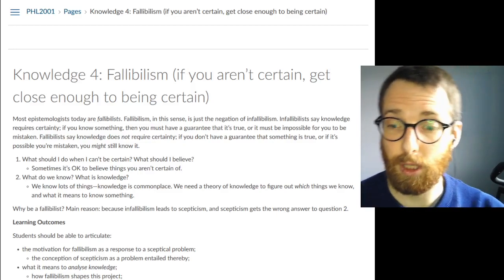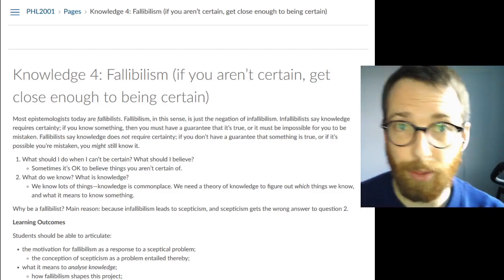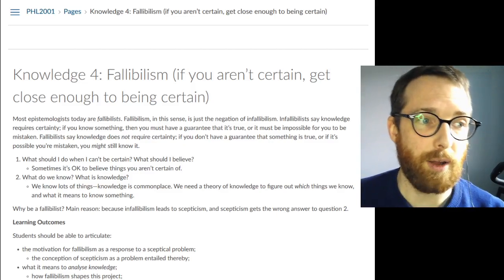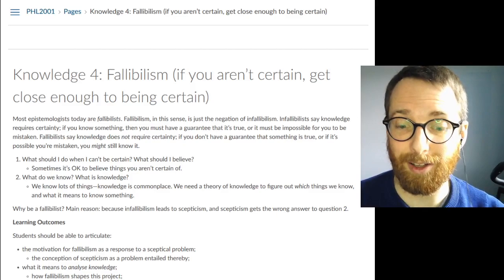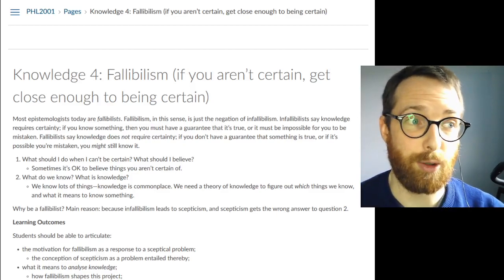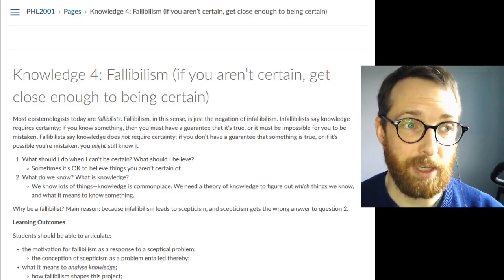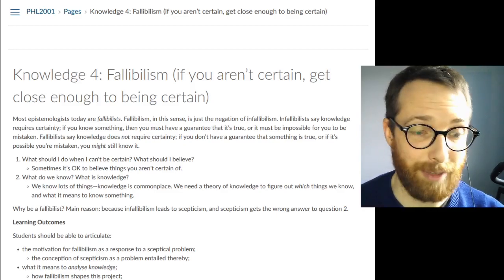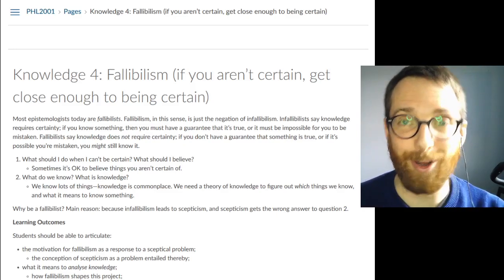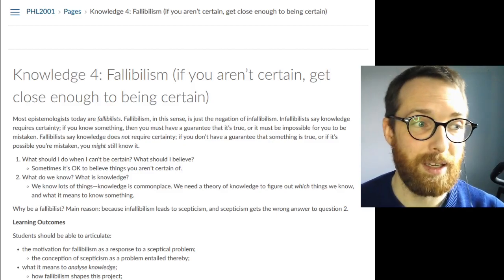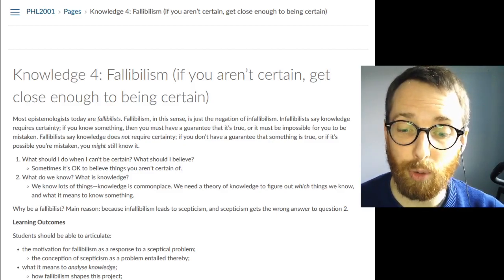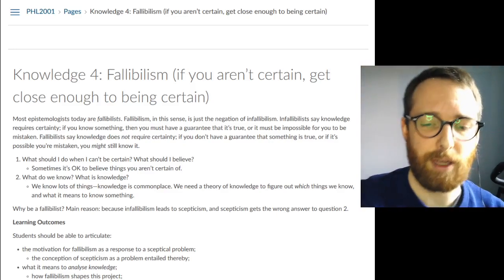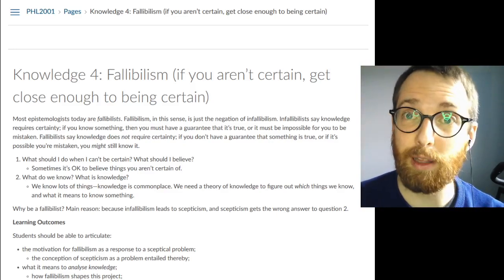If you are uncertain, you should get certain. The worry with that is that it leads to skepticism. That seems to lead to skepticism because it turns out, the consensus now is, it's difficult to achieve that kind of certainty. Those sorts of guarantees are not available in abundance. So the worry is, if we make the criteria for knowledge too strict, if we say you have to have this really impressive thing in order to have knowledge, then we wind up being stuck saying you know very little or maybe nothing.